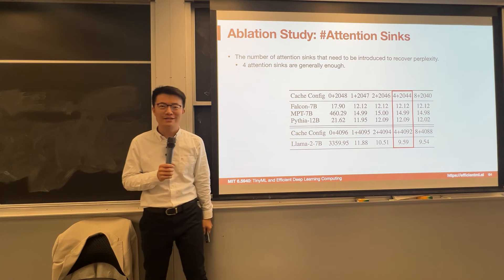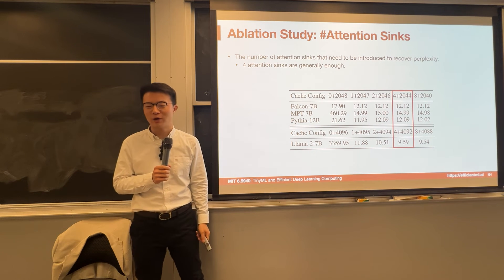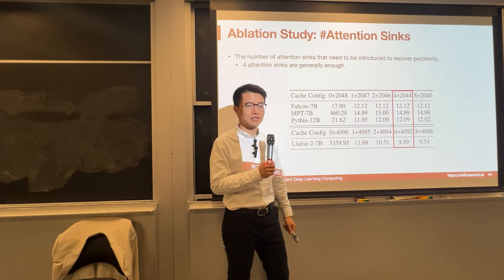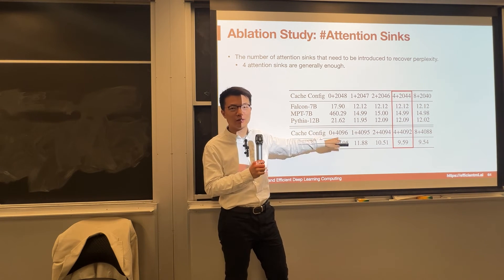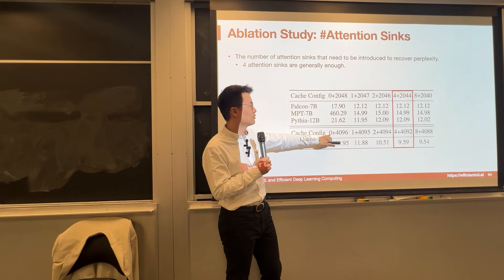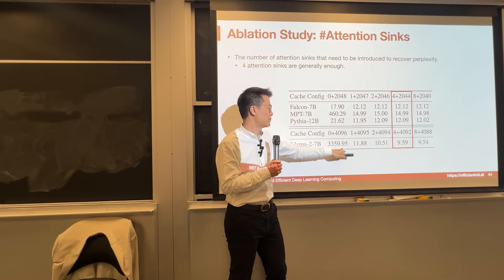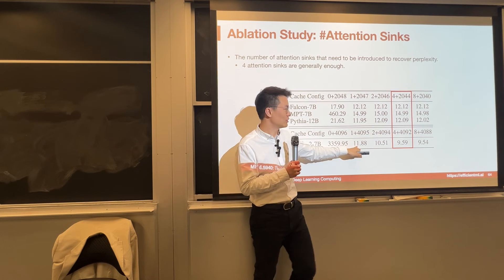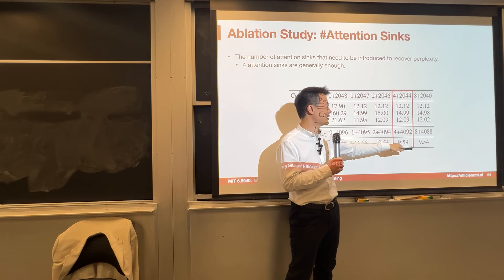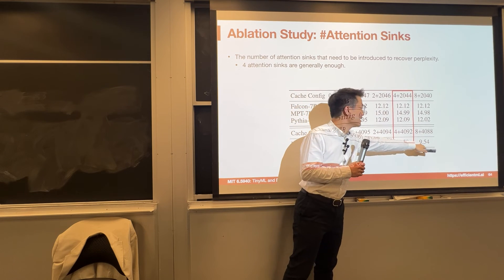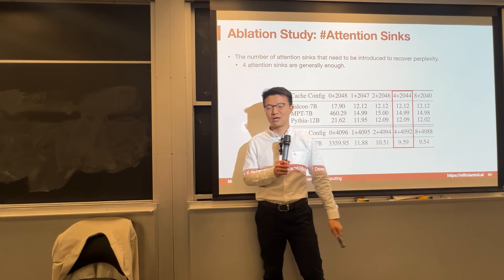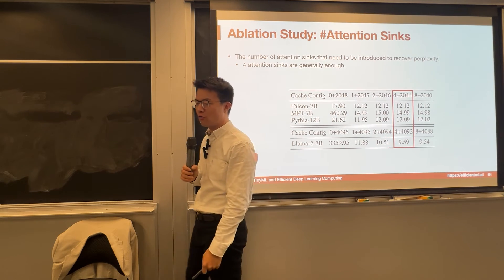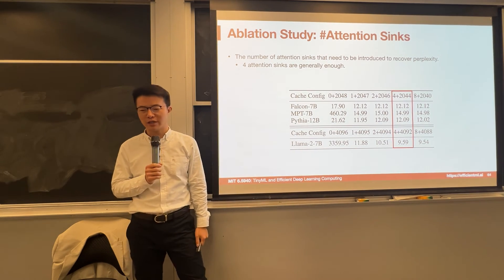So how many attention sinks are needed? Previously we mentioned four, but why? We tried different configurations: without any attention sink — keeping zero tokens in front — the model perplexity exploded. One attention sink gave perplexity 11, two gave 10, four gave 9, and eight attention sinks didn't help much more. So it begins to plateau between 4 and 8, and we decided to use 4 tokens as the number of attention sinks.